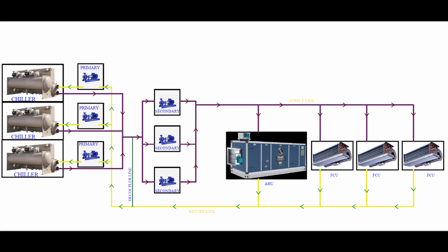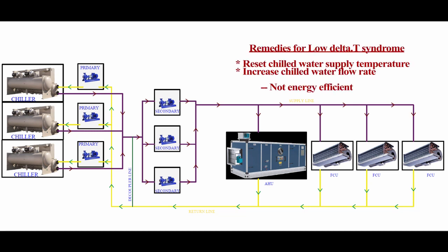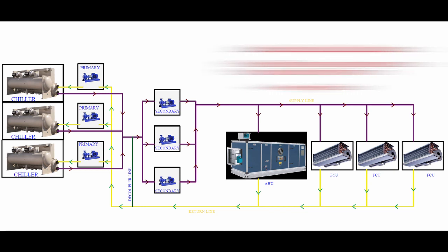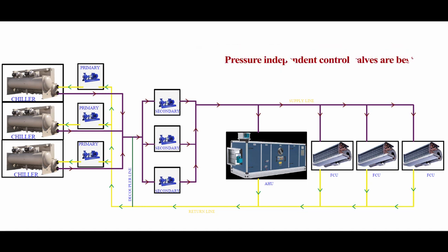By resetting the chilled water supply temperature of the chiller, or by increasing the chilled water flow rate through the chiller, we can avoid low delta T syndrome, but both methods are not energy efficient. Nowadays, we have pressure independent control valves as balancing valves. Irrespective of the difference in differential pressure, they will always give a constant chilled water flow rate. Also, balancing is only required at the beginning. Nowadays, it is more sophisticated by automation.